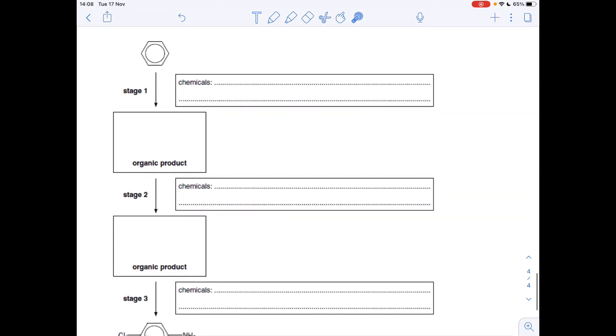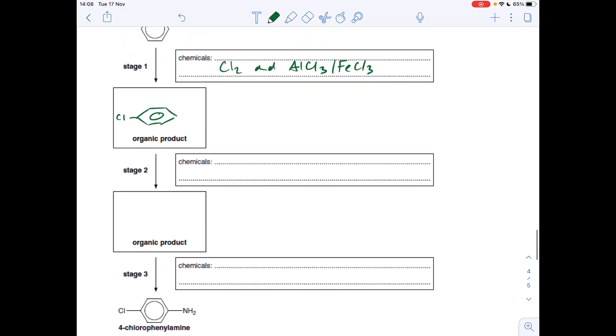Okay, so the first thing we need to do is we need to get that chlorine on. So we're going to react benzene with Cl2 and an AlCl3 catalyst, okay, or you could use FeCl3. So that's going to give us chlorobenzene, and I'll put the chlorine on the left, because that's where it is in the final product.